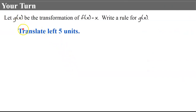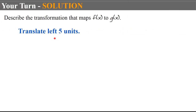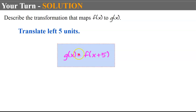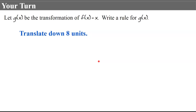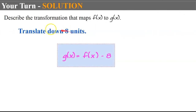Now write a rule for G in terms of F that represents a given translation. The graph is going left, so H is negative 5. Subtracting negative 5 is written as adding 5, so G of X equals F of X plus 5. One more: we're translating down 8 units — that happens to F of X — and going down means we subtract 8. So G of X equals F of X minus 8.